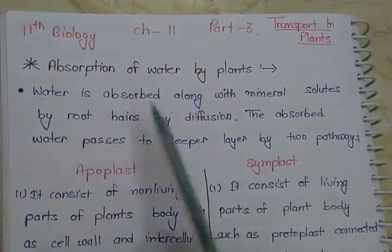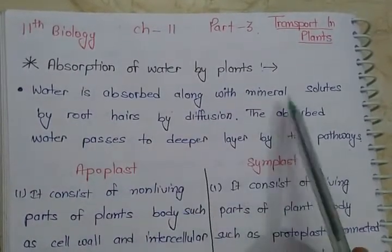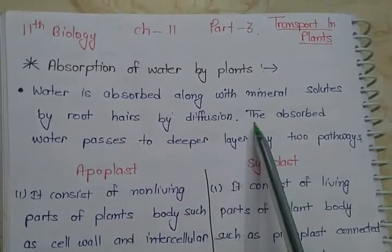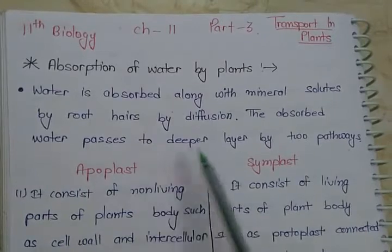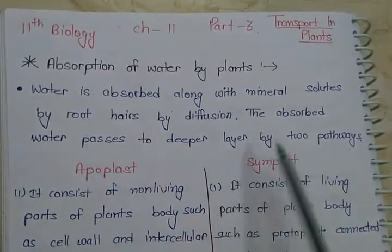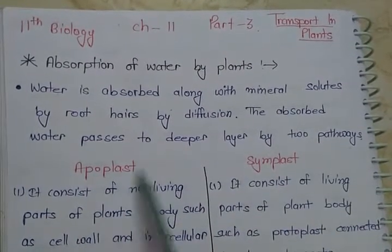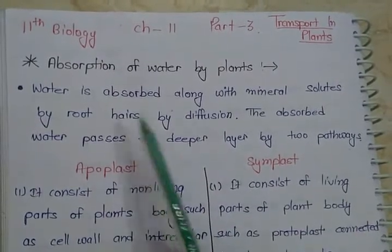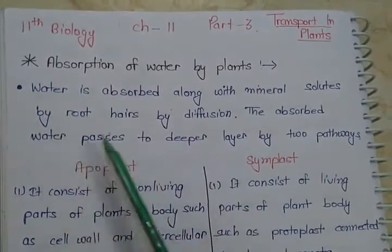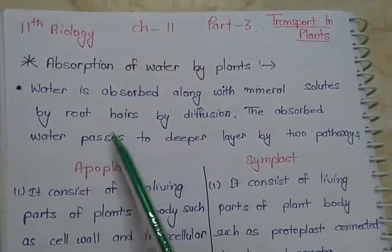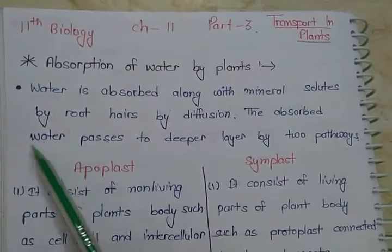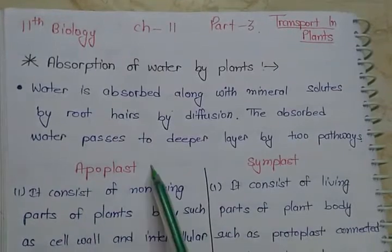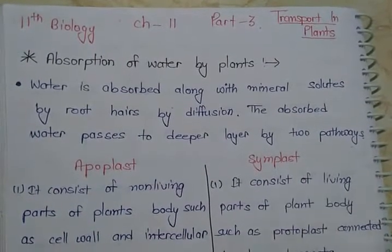Water is absorbed along with mineral solutes by root hairs by diffusion. Then water passes to deeper layers by two pathways: Apoplast and Symplast. Root hairs diffusion ke through water ko absorb kar lete hain, then water passes to deeper layers by two pathways — first Apoplast, second Symplast.